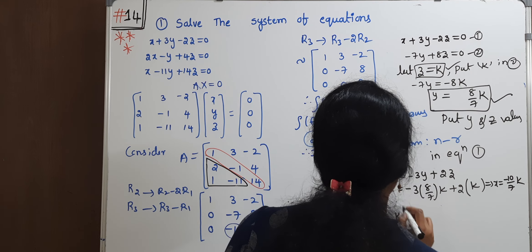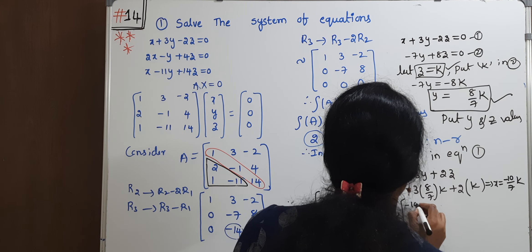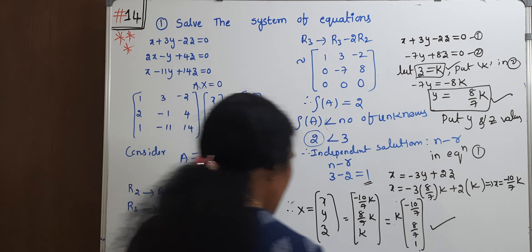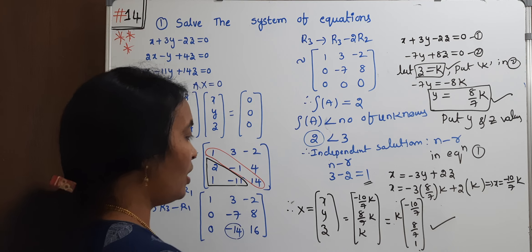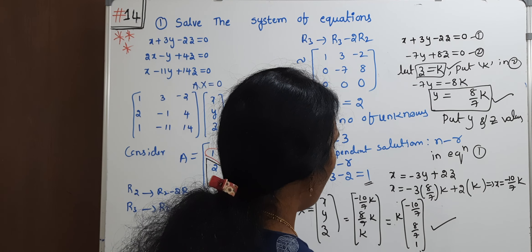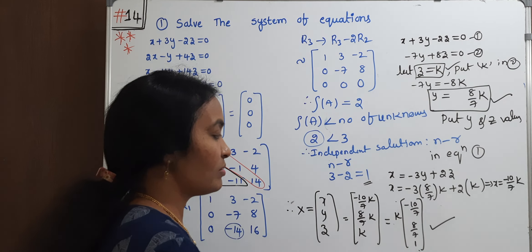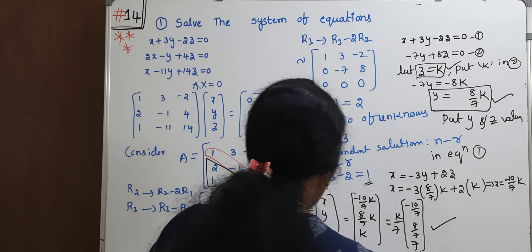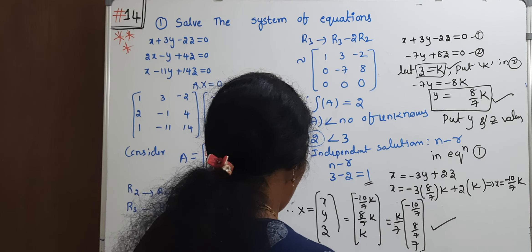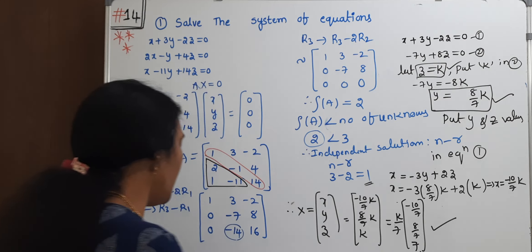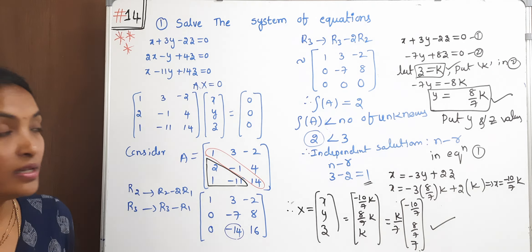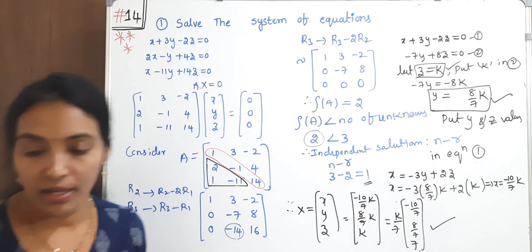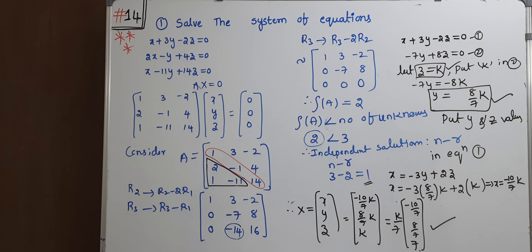Therefore our x, y, z: x is equal to -10 by 7k, y is 8 by 7k, z is k. If you take k common from there, k by 7 times -10, 8, 7. This is our general solution.